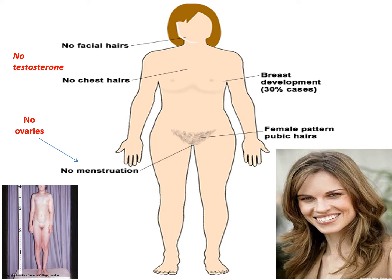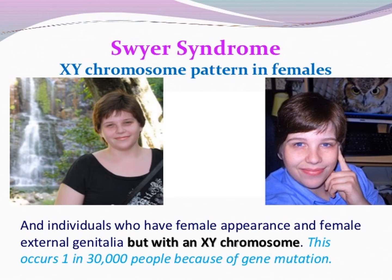This is the actual appearance of this female: no facial hair, no chest hair, because there is no testosterone. No ovaries, so no menstruation. The gonads are testes but not functioning. The female pattern of pubic hair is present because the female character is neutral. Breast development occurs in many cases, so the appearance of the female is normal in this syndrome. It occurs in around one in 30,000 people due to gene mutation of the SRY gene on the short arm of the Y chromosome.